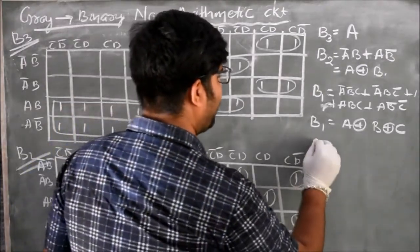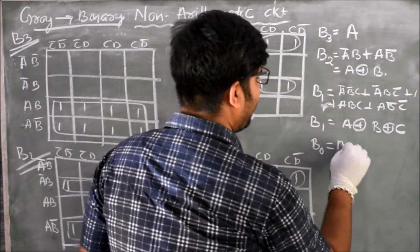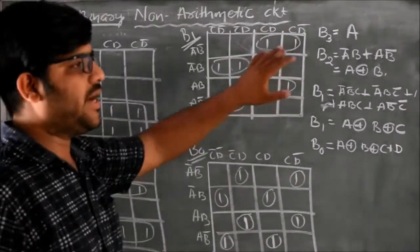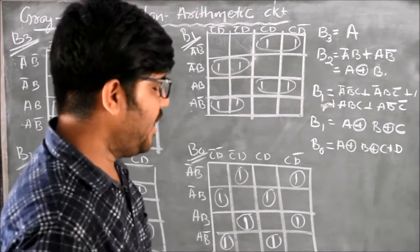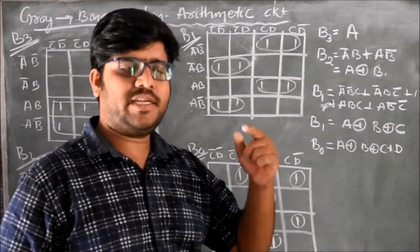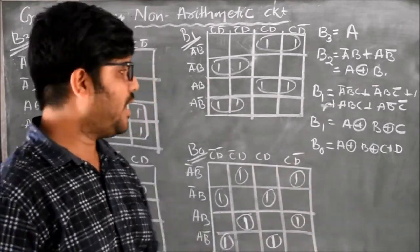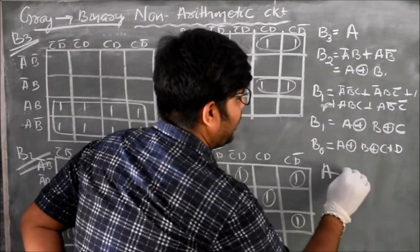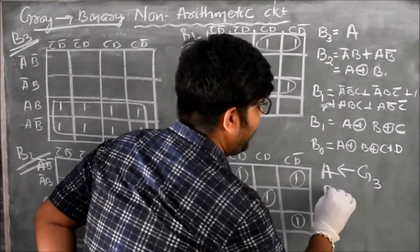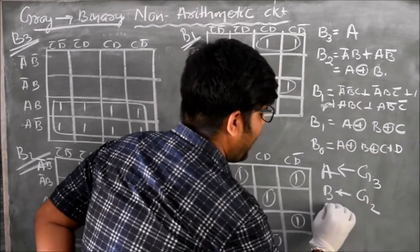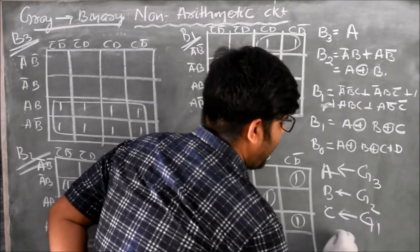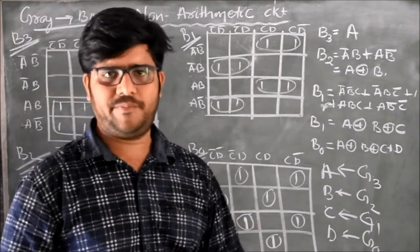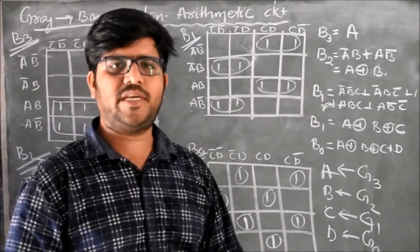The expression for B0 is B0 = A XOR B XOR C XOR D. To clarify the variable naming: the truth table columns are G3, G2, G1, G0 and B3, B2, B1, B0. Here A corresponds to G3, B corresponds to G2, C corresponds to G1, and D corresponds to G0. The naming of unknowns does not matter — you can substitute accordingly.